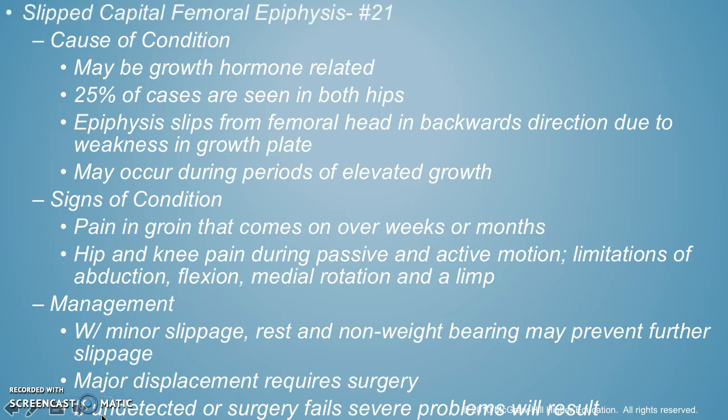The other condition is called slipped capital femoral epiphysis. This might be growth hormone related, and 25% of cases are seen in both hips. What happens is the epiphysis slips from the femoral head in a backwards direction due to there not being enough strength in that growth plate. We typically see this in really tall, skinny boys when they grow really fast. They get a pain in their groin that comes on over weeks or months, and then hip and knee pain during motion. If it's just minor slippage, you can rest, but if it's major displacement, they're going to need surgery.